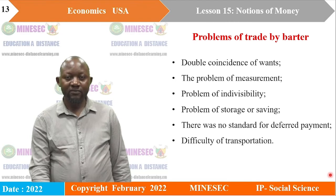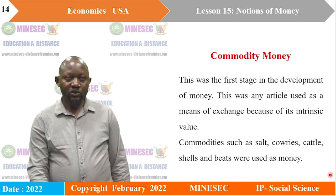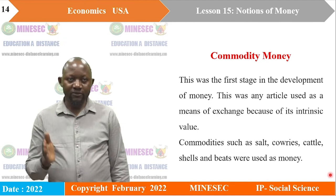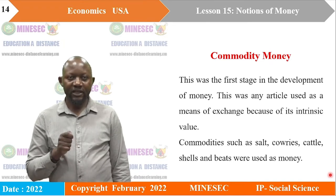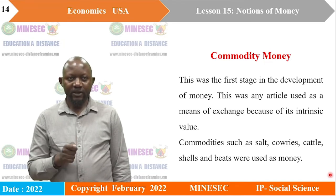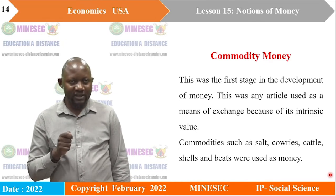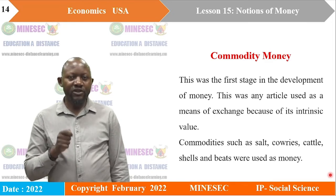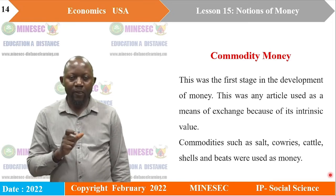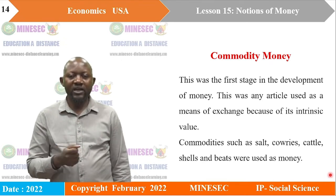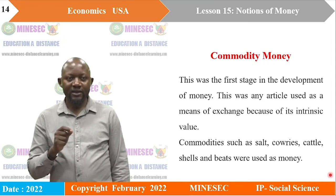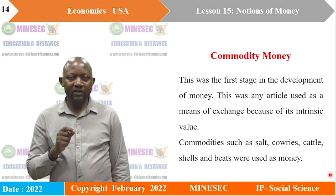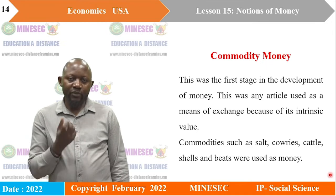Because of these problems, money was introduced. We are going to see the evolution of money, starting with commodity money — the first stage in the development of money. Commodity money was any article used as a means of exchange because of its intrinsic value. Many articles that were highly prized in societies were used as money: examples include salt, cowries, cattle, shells, and beads.